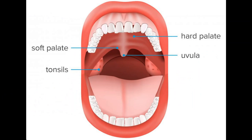So what's the soft palate? Most of the roof of your mouth is called the hard palate. But as you go further back towards the throat, the hard palate becomes softer and more fleshy. The soft tissue portion in front of the uvula is called the soft palate.